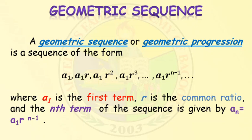A geometric sequence, or geometric progression, is a sequence of the form: a sub 1, a sub 1 times r, a sub 1 times r squared, a sub 1 times r cubed, and so on up to a sub 1 times r raised to n minus 1. Here, a sub 1 is the first term, r is the common ratio, and the nth term is given by a sub n equals a sub 1 times r raised to n minus 1.